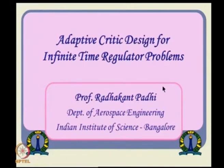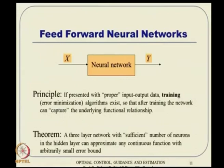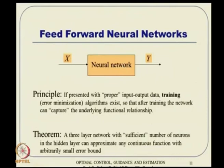Now let us look at adaptive critic design for infinite time regulator problems, followed by SNAC as an extension. This approach assumes you have some background in neural networks. If not, there are toolboxes available in MATLAB and other software with neural network training algorithms to experiment with. You can think of a neural network as a function approximation black box: given some input, you get some output, provided the weights are selected properly.